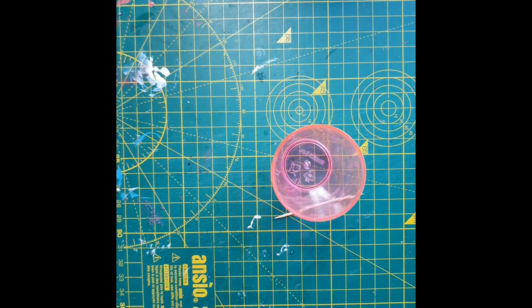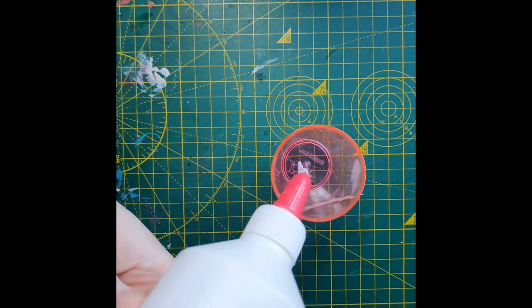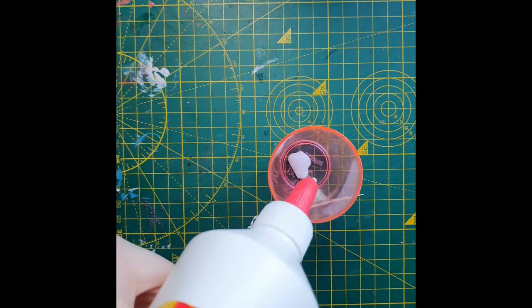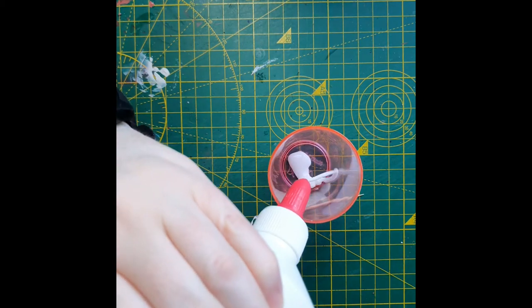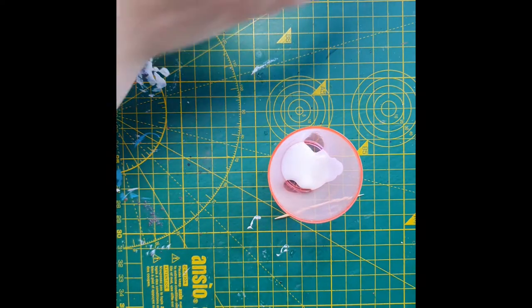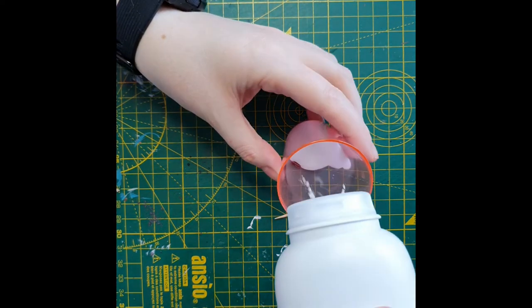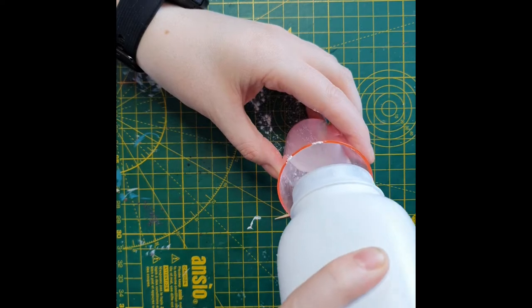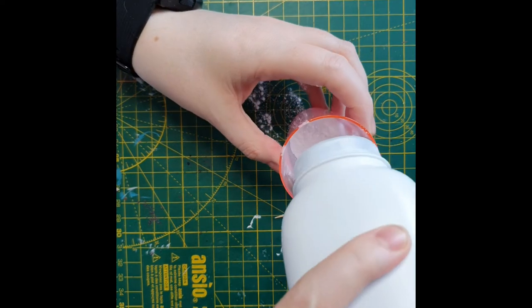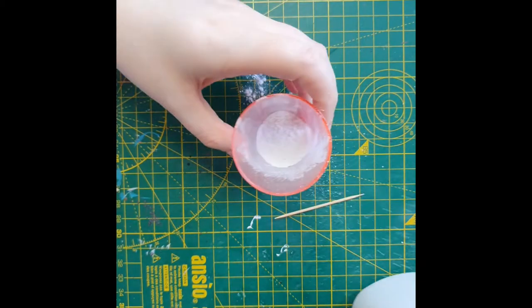So all we're going to do is take your PVA glue and squeeze it into your container. And then you're going to add roughly the same amount of talc to the pot. You want about a 50-50 mix but it doesn't matter if it doesn't go quite right because you can always add more of the talc if it's too sticky or you can add more glue if it goes too dry.